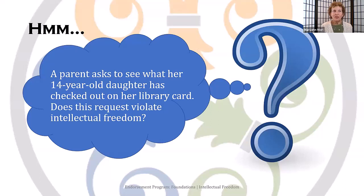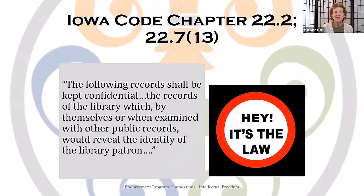Situation number two: a parent asks to see what her 14-year-old daughter has checked out on her library card. Does this request violate intellectual freedom? In our legal course, you will learn more about this section of Iowa Code. Library records are protected by state law — specifically section 2 of chapter 22 of the Iowa Code. You should keep what patrons have checked out private, both from the public and from the government, because it's the law.